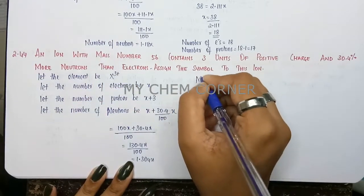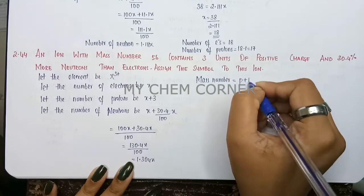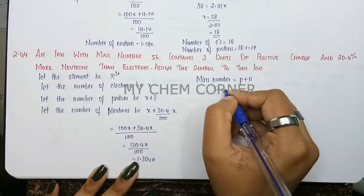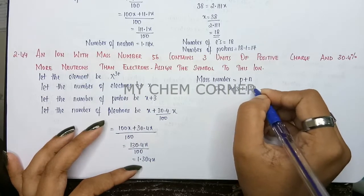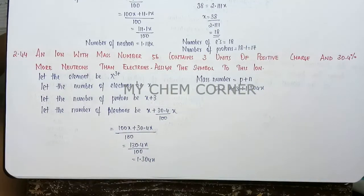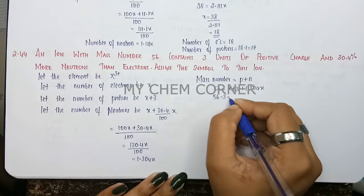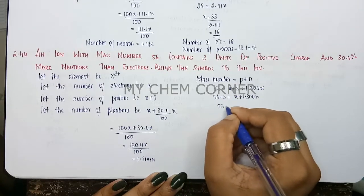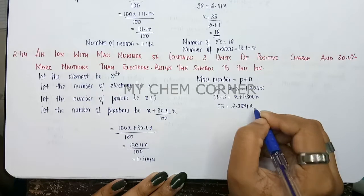Since mass number equals number of protons plus number of neutrons, we write: 56 equals (x + 3) plus 1.304x. Shifting the 3 to the left-hand side gives 56 minus 3 equals x plus 1.304x, so 53 equals 2.304x.